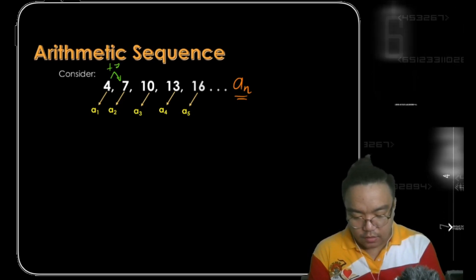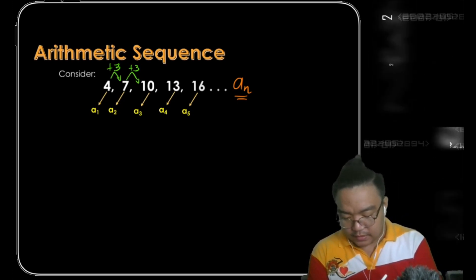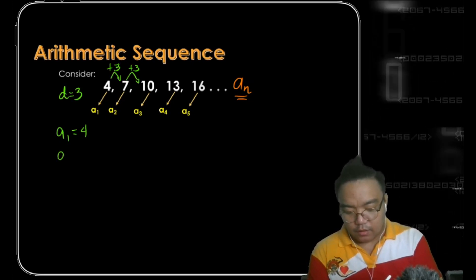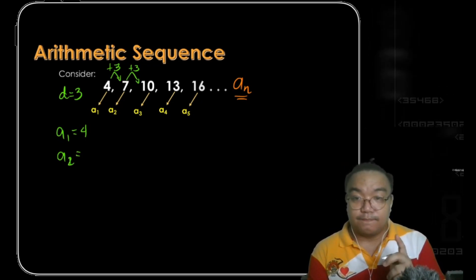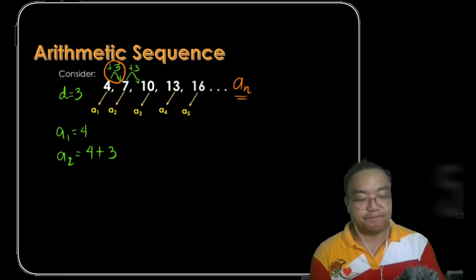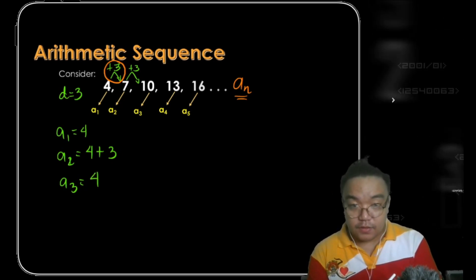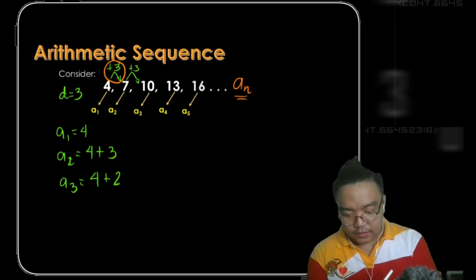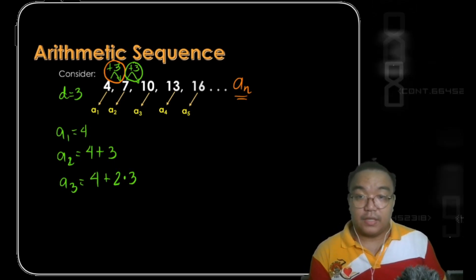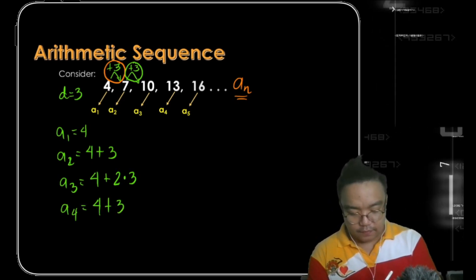This sequence has a common difference of positive 3 — to get the next term we add 3. So a sub 1 equals 4 and our common difference d equals 3. A sub 2 is 4 plus 3, giving us 7. A sub 3 can be obtained by adding 4 plus two 3s. A sub 4 is 4 plus three 3s.